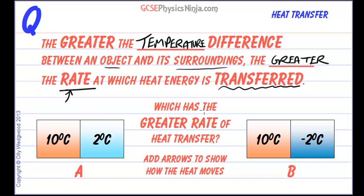So here we have an example: which has the greater rate of heat transfer? Add arrows to show how the heat moves. Well, what's the temperature difference in A's case? The temperature difference is 10 minus 2, so we have an 8 degree temperature difference — 8 degrees C. And heat always flows from the hotter to the cooler, so heat will flow that way.